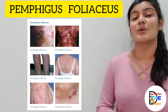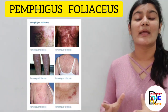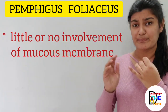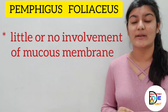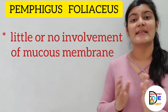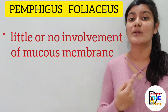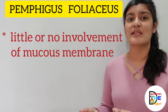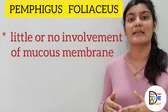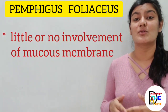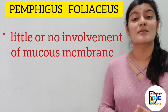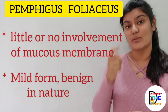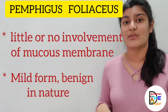Starting with pemphigus foliaceus — in a way it is similar to pemphigus vulgaris, but there are two distinctive differences. First, in pemphigus foliaceus there is little or no involvement of the mucous membrane. Pemphigus vulgaris had significant oral mucosal involvement, but here cutaneous lesions — blisters or erosions on the skin — appear while oral mucosal involvement is very minimal. It is also a milder and more benign form of pemphigus.